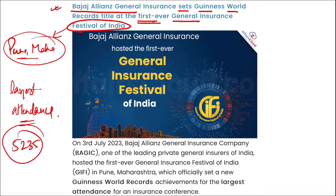The General Insurance Festival of India started with the idea of creating a platform to bring together the best of the general insurance industry and celebrate the industry's contribution to society's well-being. The event featured attractions like an Automobile Zone with manufacturers like Porsche, McLaren, and Lamborghini. The event was graced by Sanjiv Bajaj, Chairman and Managing Director of Bajaj Finserv.